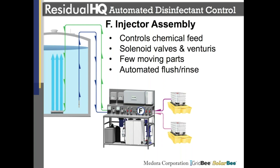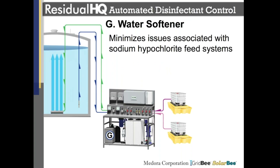Next is the injector assembly, where we distance ourselves from metering pumps. Instead, we use a simple collection of solenoid valves and venturis. This allows us to deliver the disinfectant with few moving parts, and includes an automated flush and rinse mechanism so the vast majority of chemically contacted components are rinsed immediately prior to and after their use. There is no static chemical sitting in the workstation. And since we use venturis, we've integrated a water softener into the system, which minimizes the issues typically associated with sodium hypochlorite systems that employ venturis.